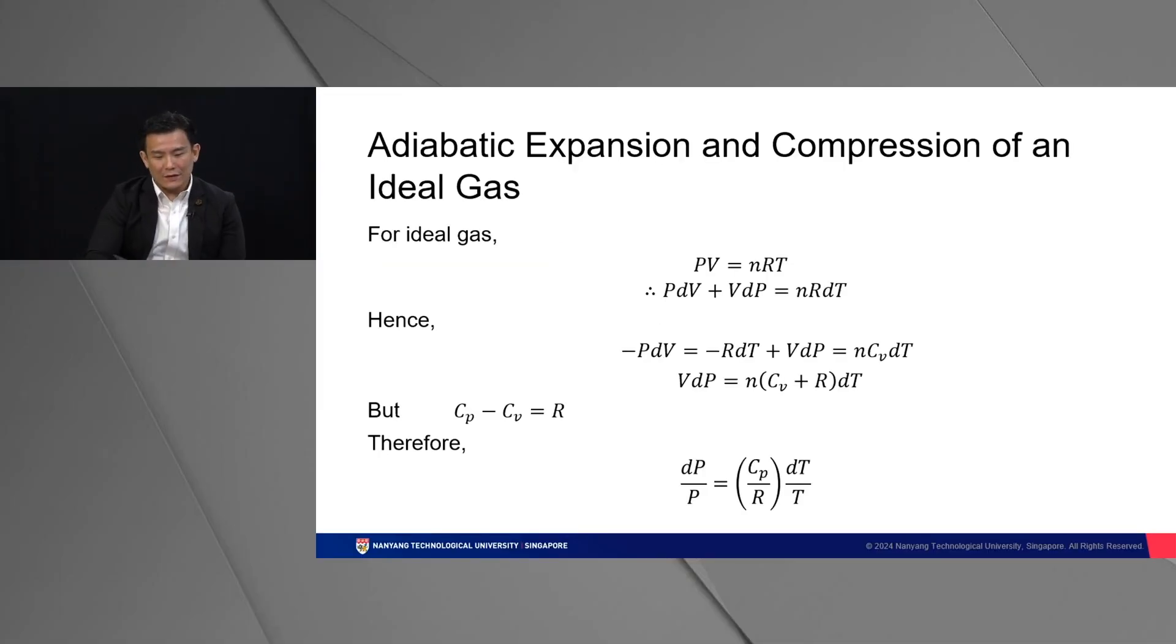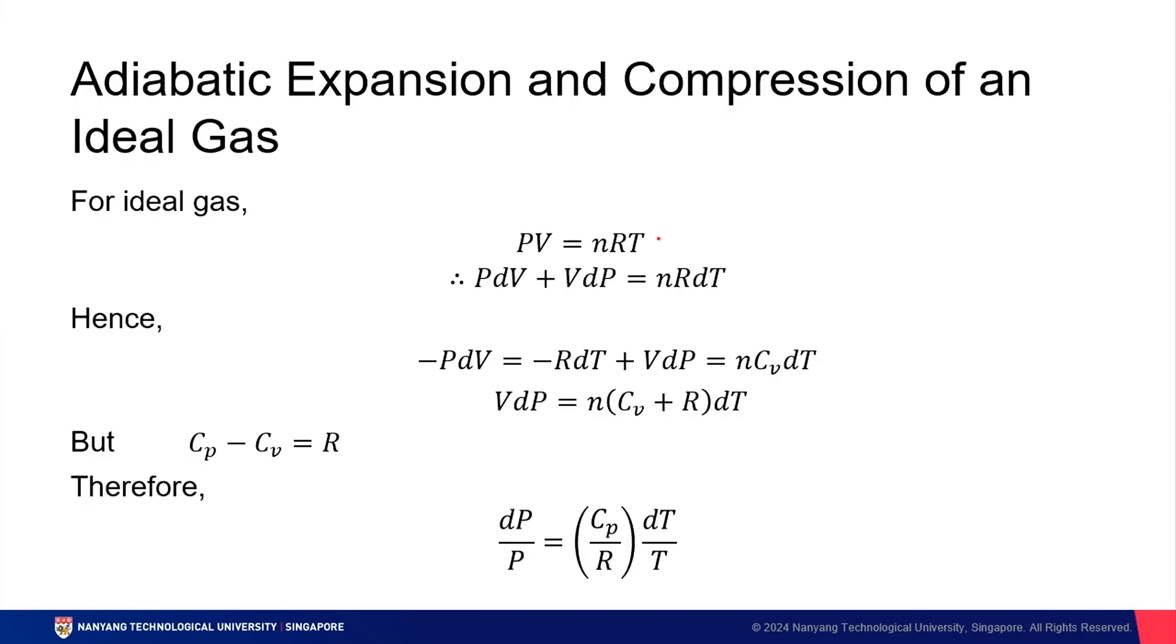So if you bear with me for a little bit, let's try to work this out, the adiabatic expansion and compression of the ideal gas. Starting with the ideal gas equation, we can differentiate it to give us PdV plus VdP equals nRdT. Why do we differentiate this? Because we need an expression for work, which is negative PdV. So this over here is an expression for work.